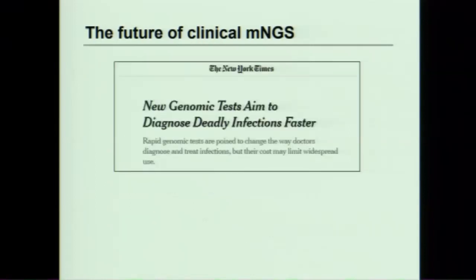Some platforms are offering tests in the range of $500 to $2,000 — very expensive for one individual test. But the counterargument is to take that in context of the patient's entire hospitalization: what might you be saving in invasive procedures, empiric treatments, or length of stay? The idea of metagenomic sequencing is already in the public eye — a recent New York Times article titled 'New genomic tests aimed to diagnose deadly infections faster' will have patients inquiring about and requesting these tests. We should really be prepared both in our own minds and in being able to talk to patients about it.